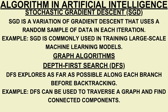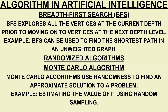Graph algorithms: depth-first search (DFS) explores as far as possible along each branch before backtracking. DFS can be used to traverse a graph and find connected components. Breadth-first search (BFS) explores all the vertices at the current depth prior to moving on to vertices at the next depth level. BFS can be used to find the shortest path in an unweighted graph.